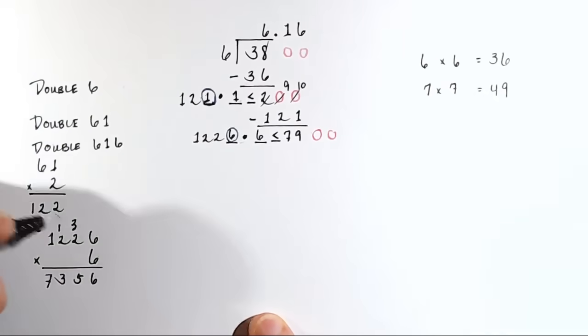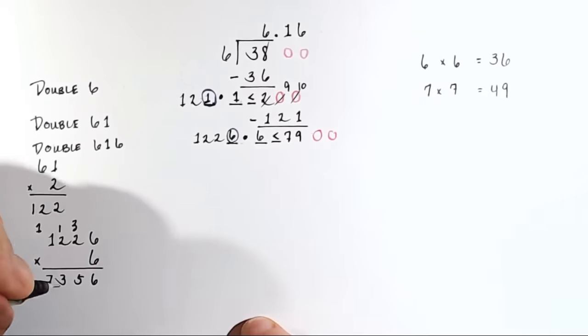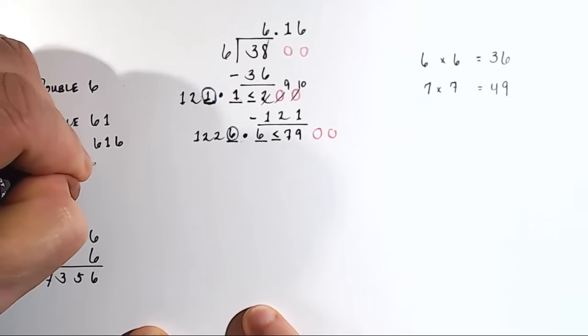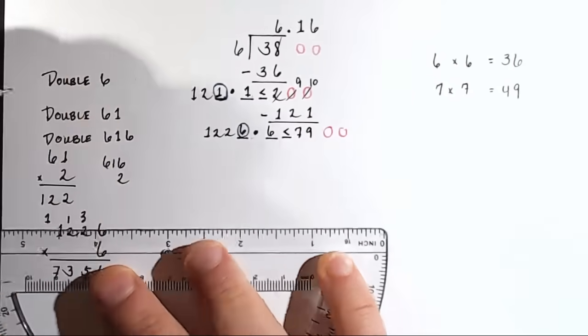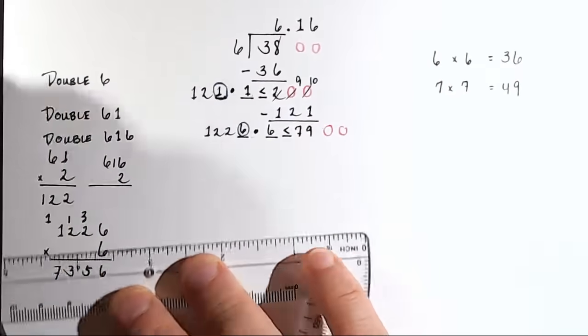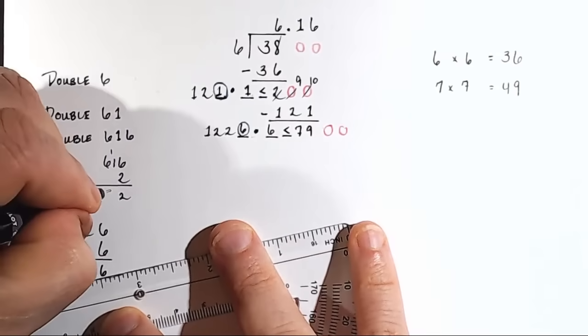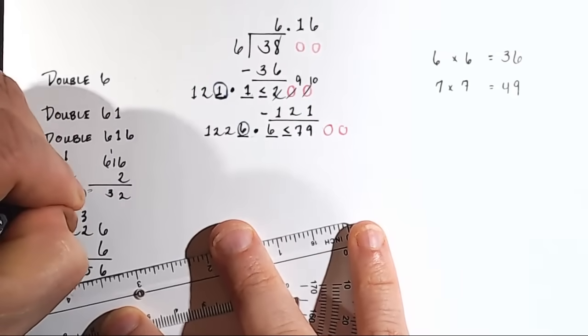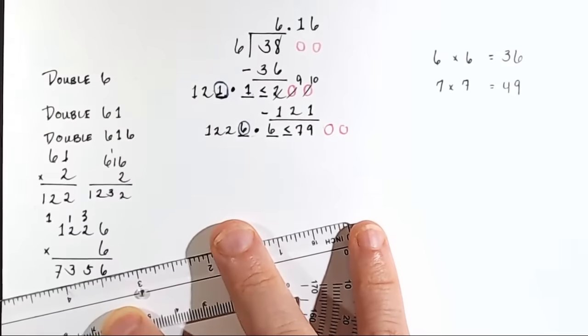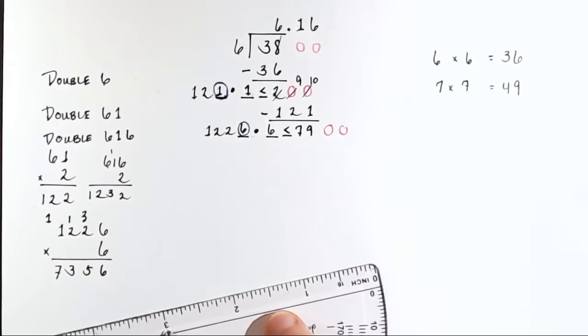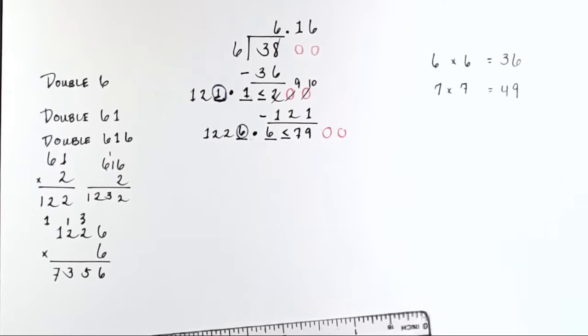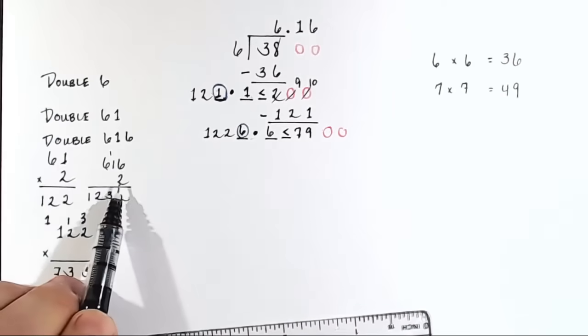So the next step in this process would be to take 6, 1, 6, times 2. And that would give me 12, carry the 1, 3, and 12. Okay? 1, 2, 3, 2, and we'll need that here in a moment.